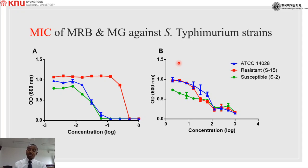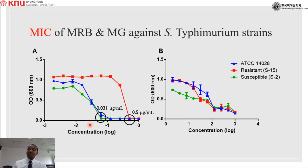We determined the MIC of marbofloxacin and methyl gallate against three strains of Salmonella Typhimurium. Two strains — the standard strain and one field strain — were susceptible to marbofloxacin at 0.031 µg/mL, while one field strain was resistant at 0.25 µg/mL, which is almost 10 times higher. For methyl gallate, all three strains showed the same MIC of 500 µg/mL.